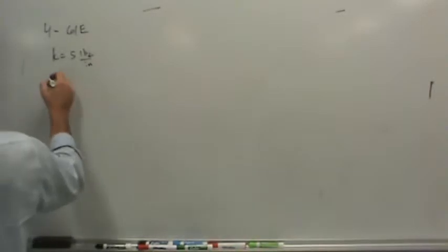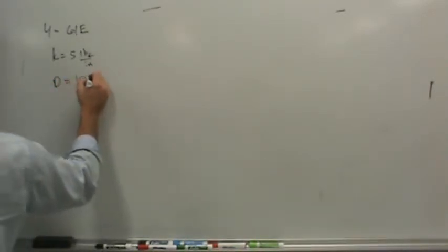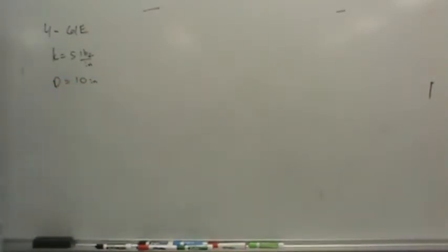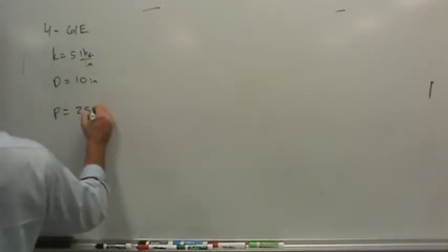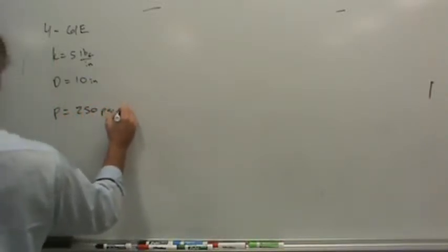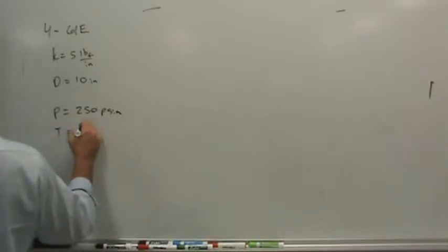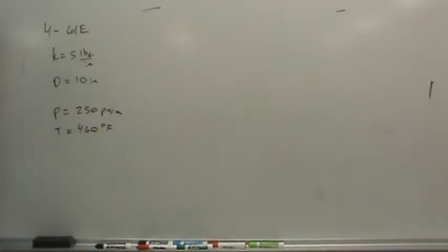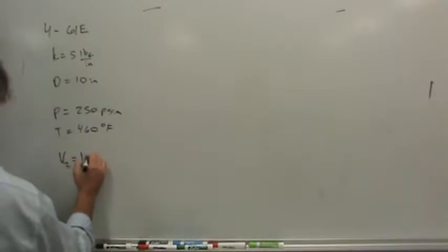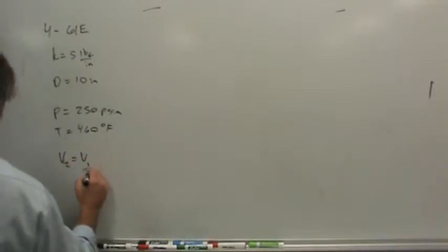Piston diameter, I'll call that V, is 10 inches. When no force is exerted by the spring on the piston, the state of the air is 250 PSIA and 460 degrees Fahrenheit. This device is now cooled until the volume is one-half its original size. So we've got V2 equals V1 over 2.